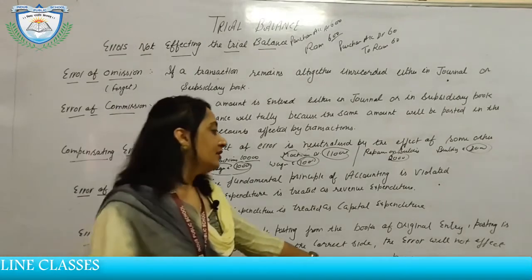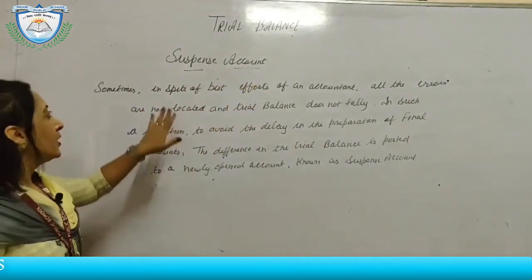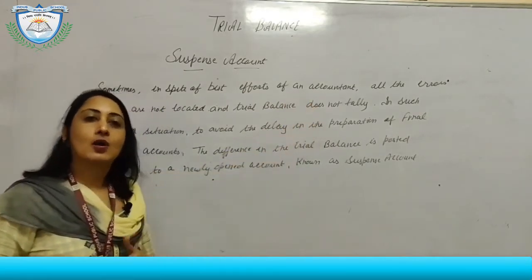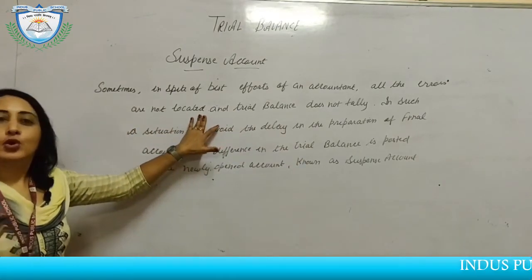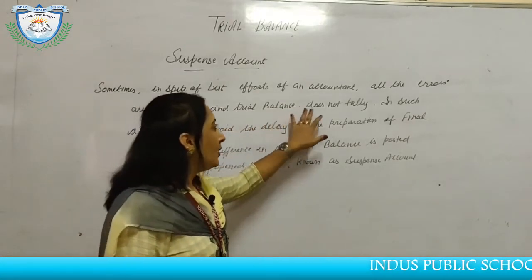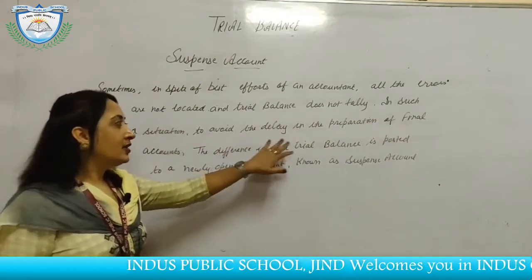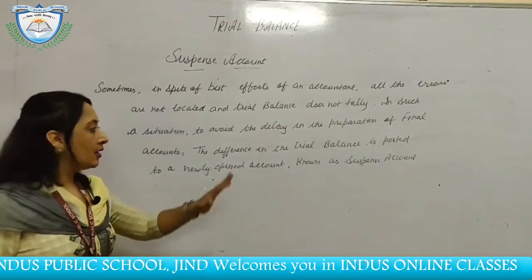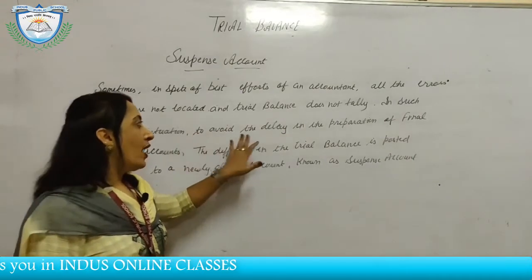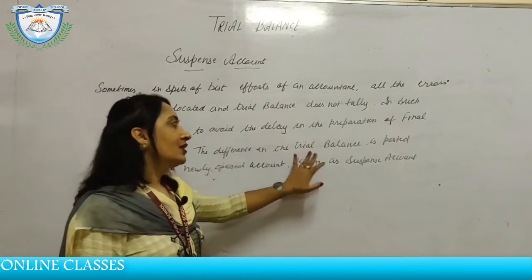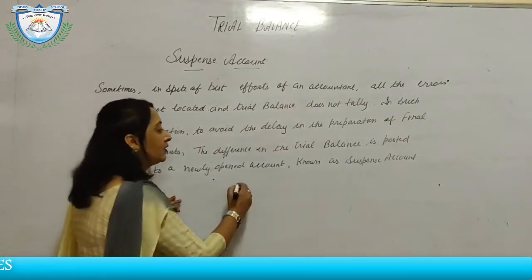Now there is a new account called the suspense account. In spite of best efforts by an accountant, if all errors are not located and the trial balance does not tally, a suspense account is opened. To avoid delay in preparation of final accounts, the difference in the trial balance is posted to this newly opened suspense account.